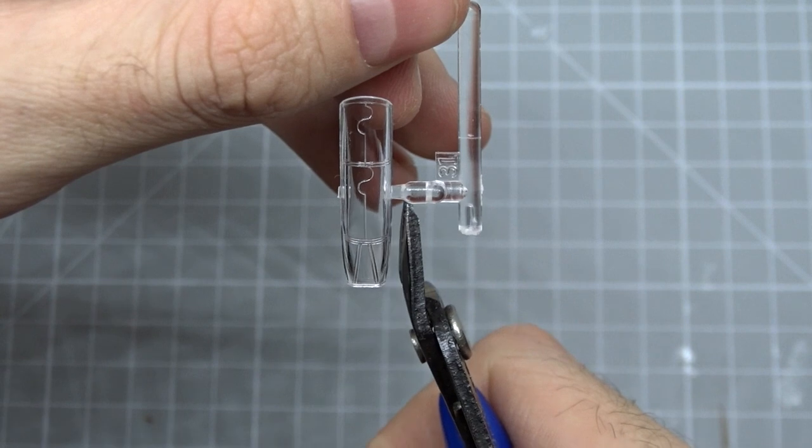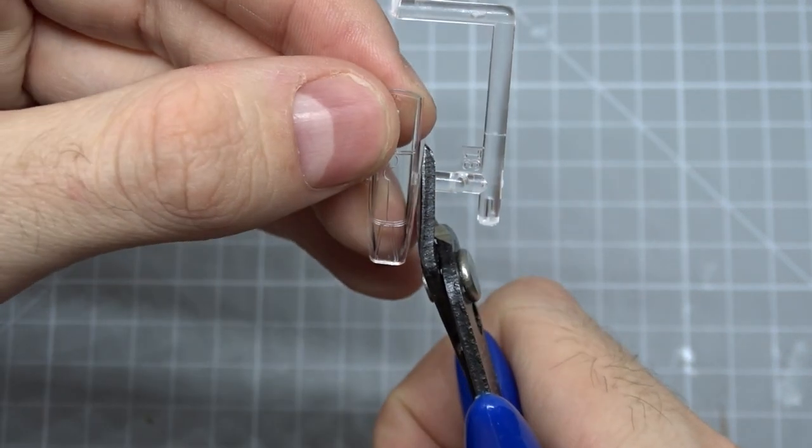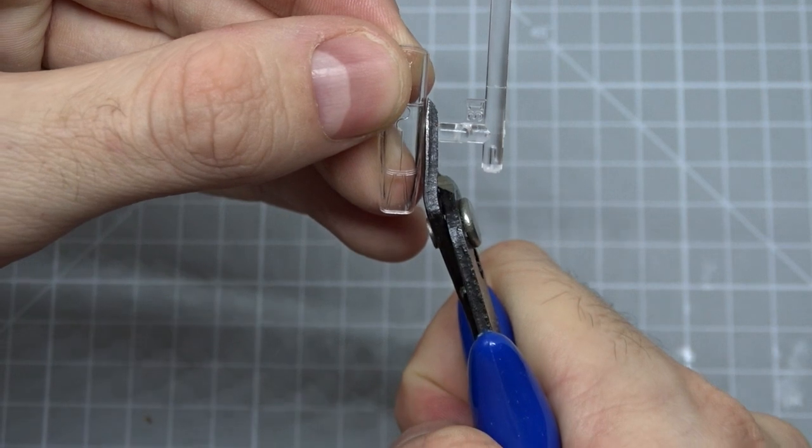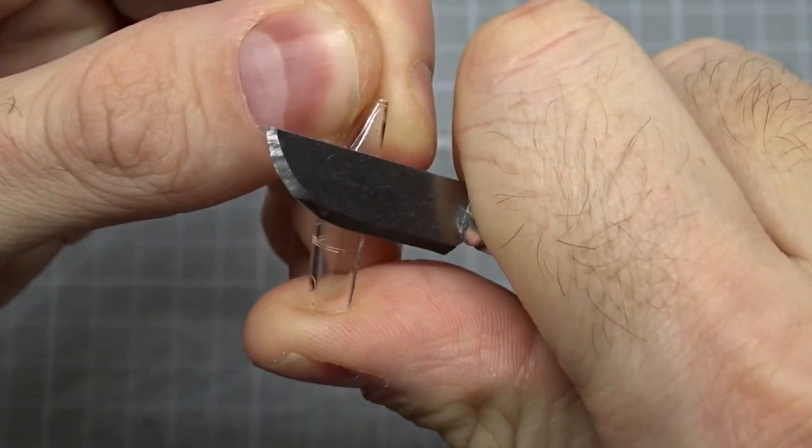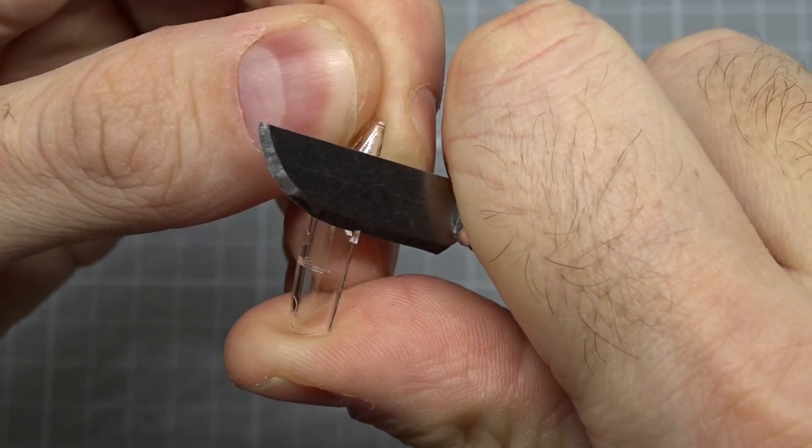Be very careful when removing the canopy and don't cut too close to it because that might damage it. These leftovers can easily be removed with a hobby knife and a sanding stick or paper.